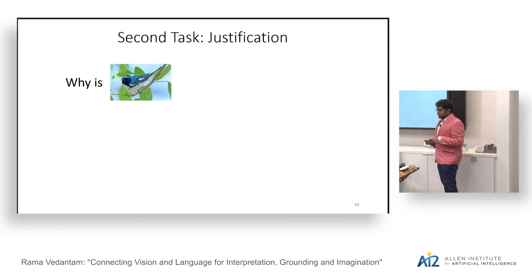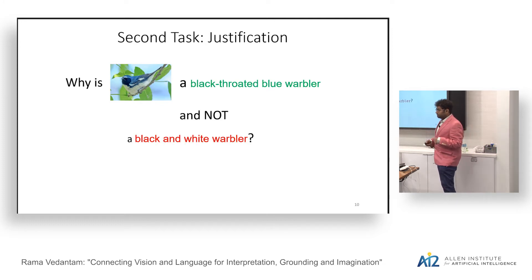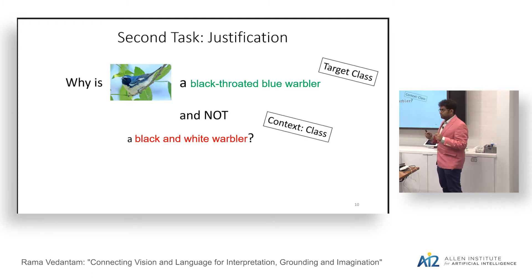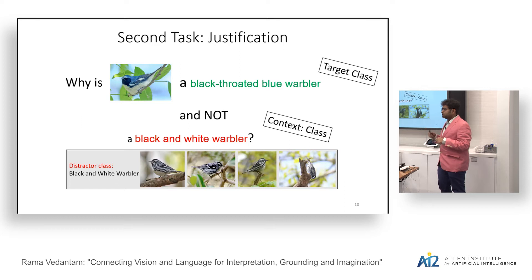By context-agnostic supervision, I mean that if given a target image, we are not assuming access to pairwise training data describing differences with various images. Instead, the data we have for training is an image with a paired sentence, and we develop techniques to explicitly model context at inference time to derive discriminative behavior. The first task has a target and distractor image, and our goal is to generate a discriminative image caption that refers to the target while not being confusing with respect to the distractor.